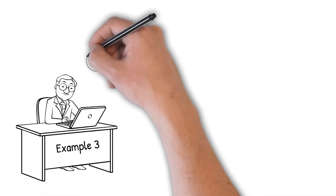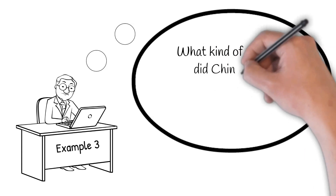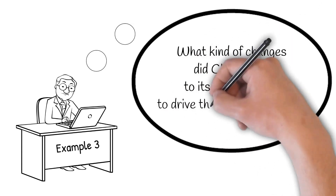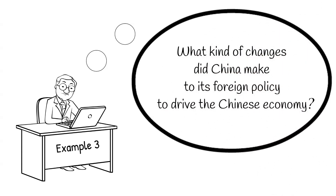Here's a third example: 'What kind of changes did China make to its foreign policy to drive the Chinese economy?' We would again need to fix the scope — what time period are we talking about? But notice there's another problem: the question has an inbuilt assumption that isn't explained. That assumption is that foreign policymaking had a specific intention to create economic progress. While that may be so, we can never really know what anyone's true intentions were, so it's best to drop such an assumption and refocus the question on something we can actually figure out in practice.